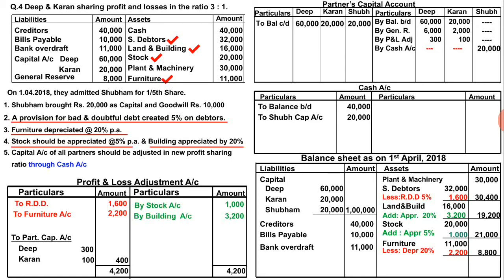For goodwill, the amounts are 7,500 and 2,500 distributed between the existing partners.